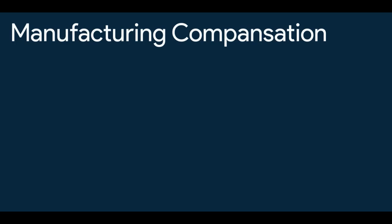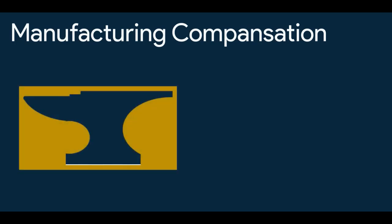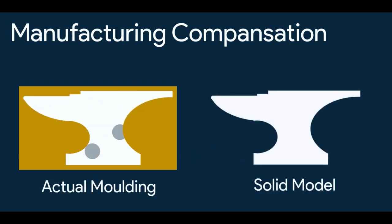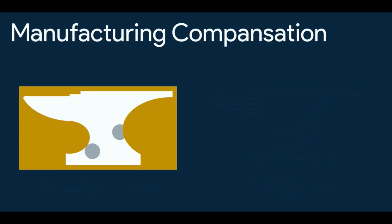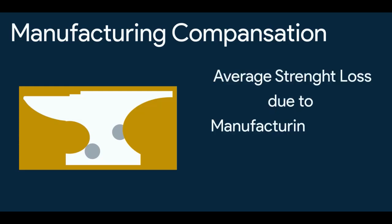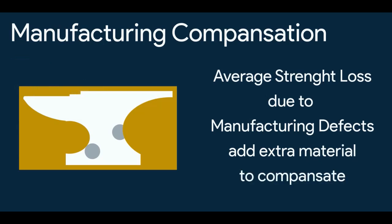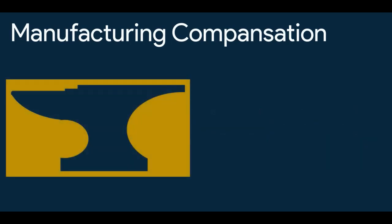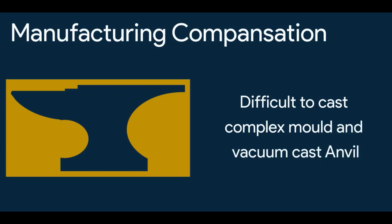Next is manufacturing compensation. Let's say I'm casting an anvil, and if in the process there are a few bubbles, so the strength may be bit less, as compared to the solid model in the computer. This is due to manufacturing imperfections. So rather than making manufacturing process complex and expensive to eliminate bubbles, it is simpler to understand the average strength loss due to manufacturing defects and just adding some extra material in the design to compensate that. So making a somewhat bigger and somewhat heavier anvil would always be inexpensive than making a difficult to cast complex mold and vacuum cast the anvil. That's why manufacturing compensation is considered.